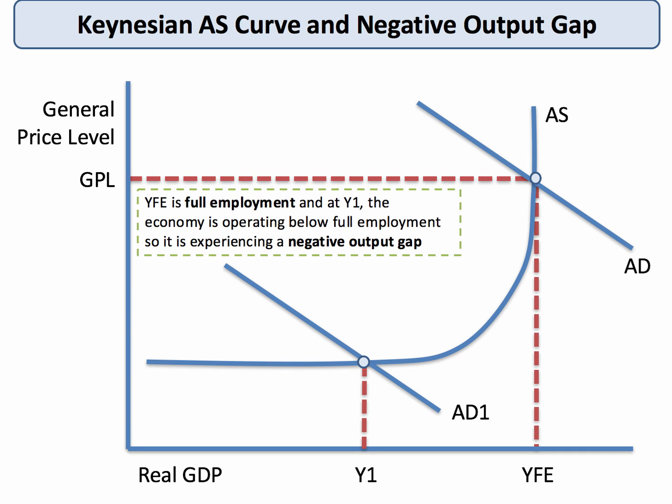YFE is full employment. If we're at a position where we have aggregate demand AD1 — quite a low level of total demand — then the equilibrium output is below full employment. We would say that the economy is operating well within its production possibility frontier, and it's operating with a negative output gap.